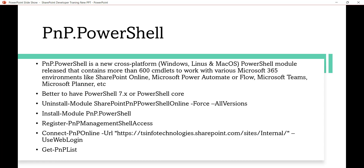It is better to have PowerShell 7 installed — also known as PowerShell Core. Previously the supported version was Windows PowerShell 5.1, but now with PowerShell 7 you get 600+ commands available. On your Windows machine you can have both PowerShell 5.1 and PowerShell Core installed at the same time, so both can coexist.